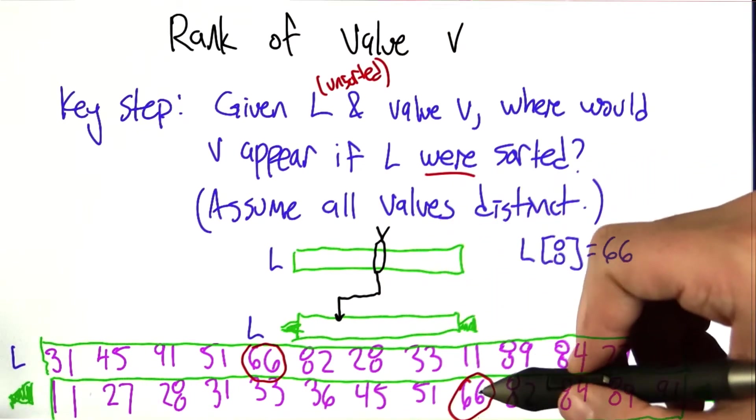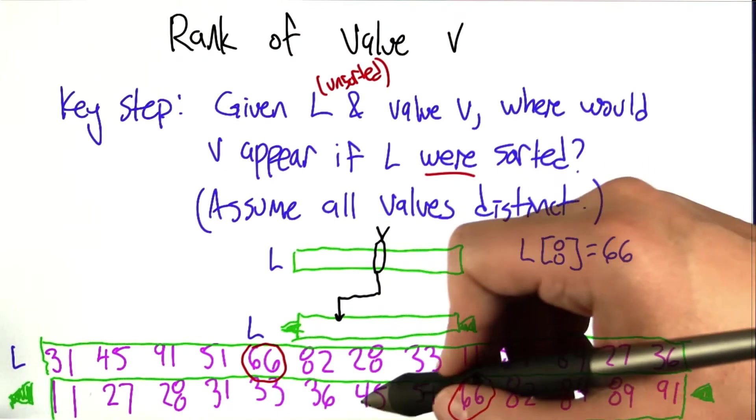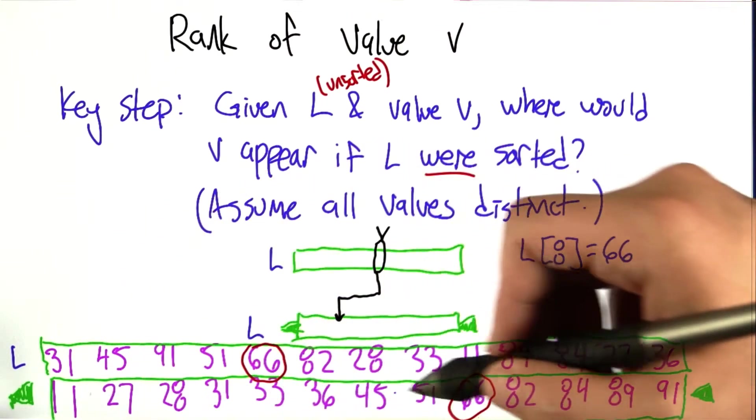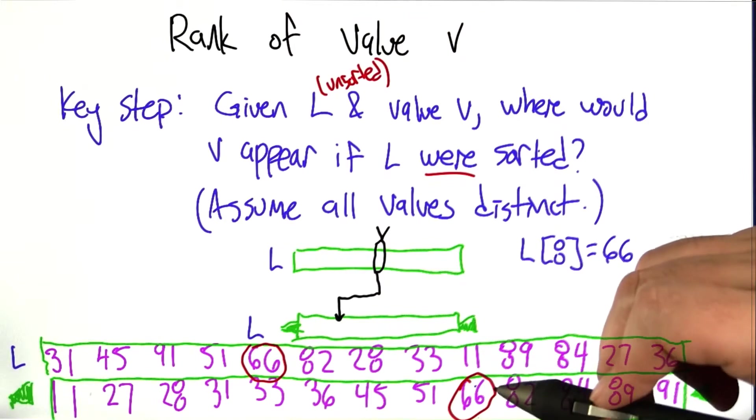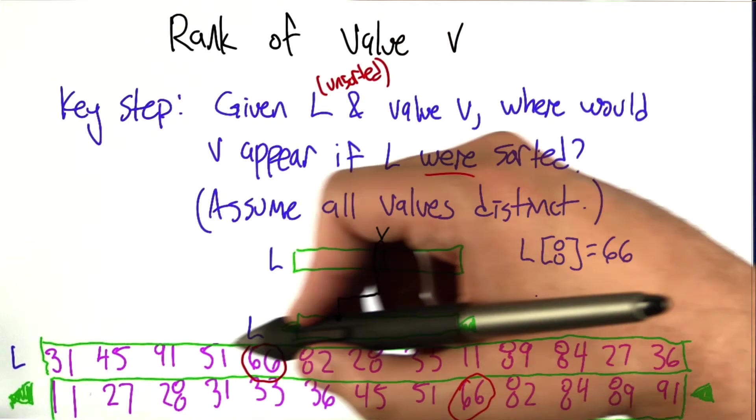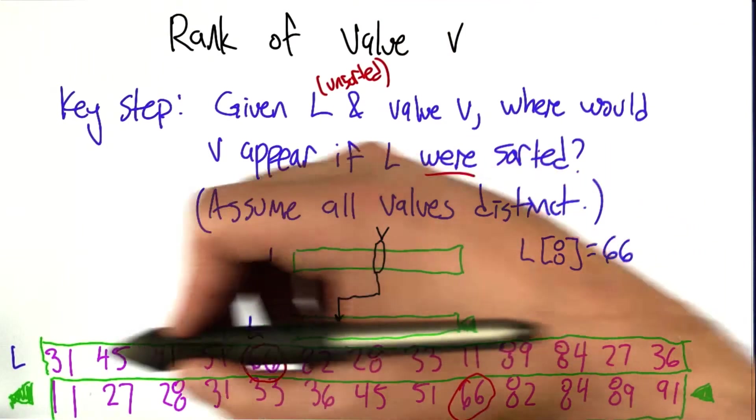So why is it in position 8? Well, it's in position 8 because there are exactly 8 elements in the list that are smaller than 66. Right? Because once it's sorted, those 8 elements are going to be to its left, and that's what's going to put 66 in the 8th position. So we can just go through this list, making note of the elements that are smaller than 66.